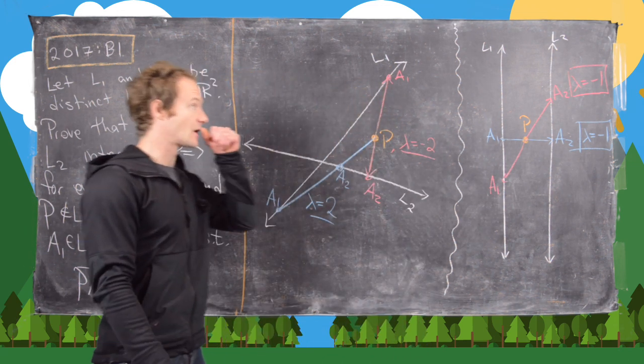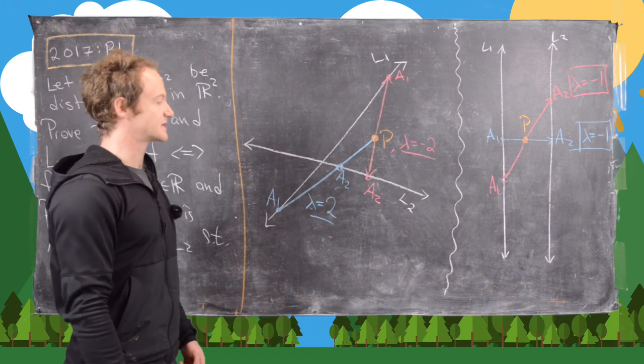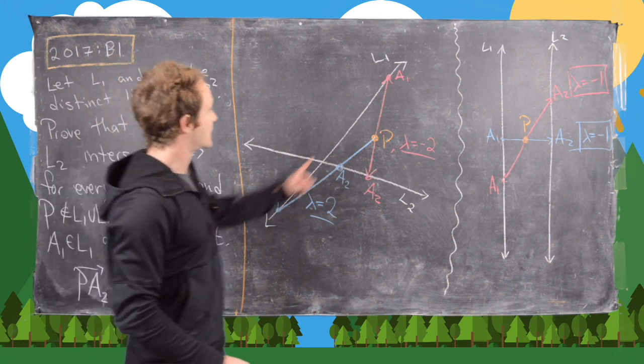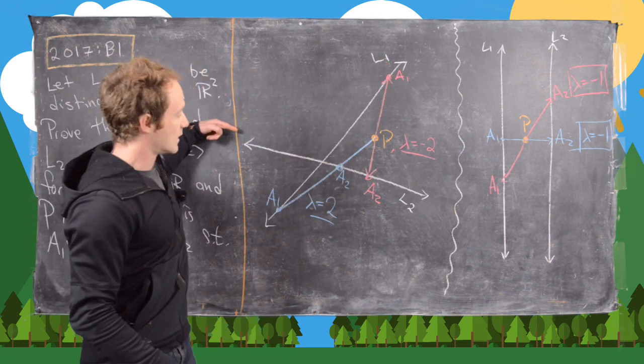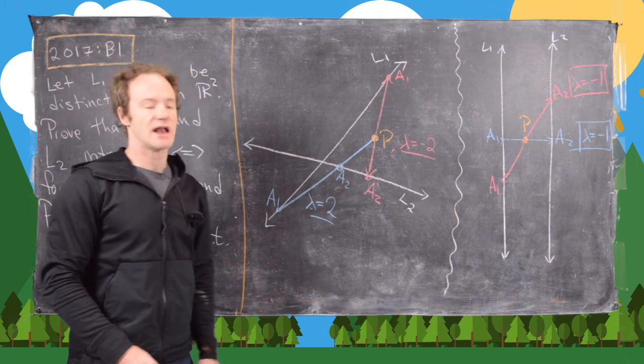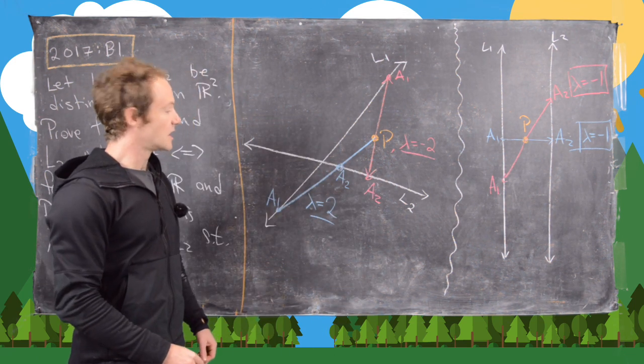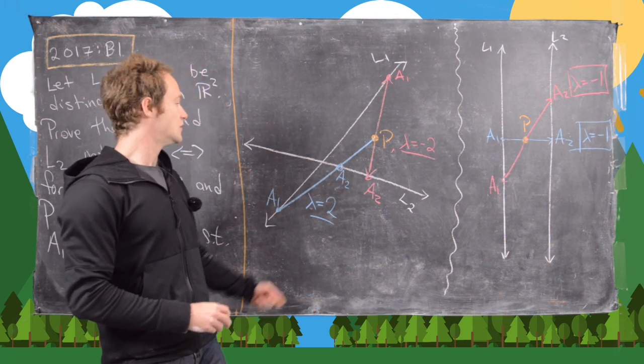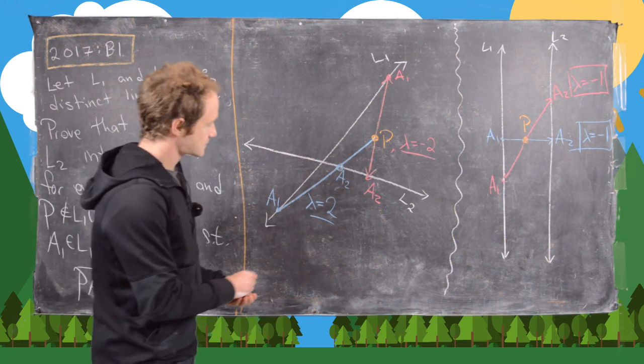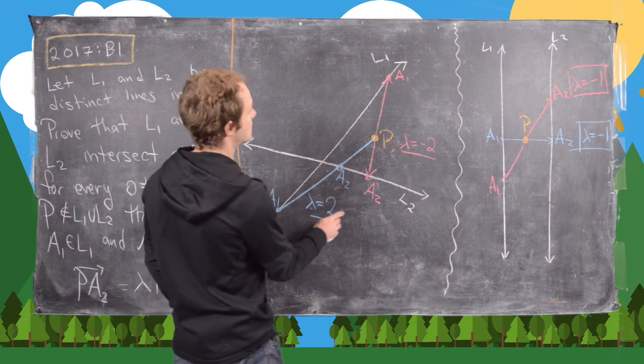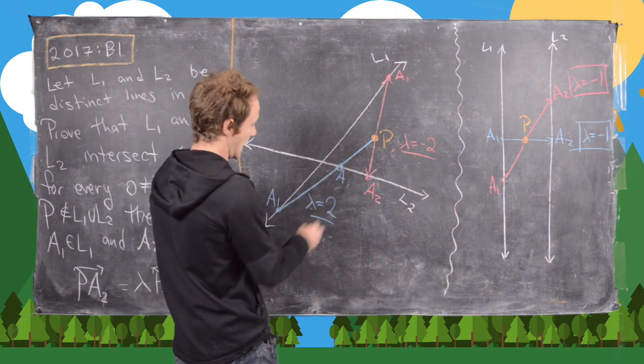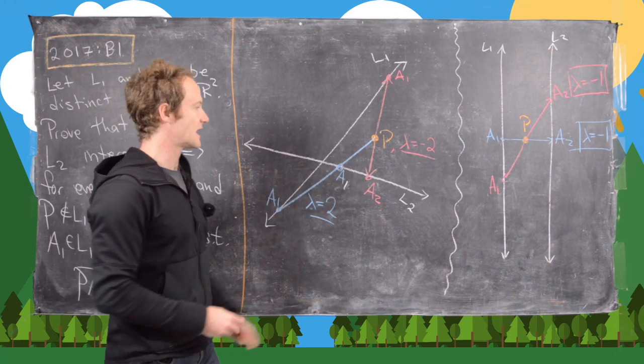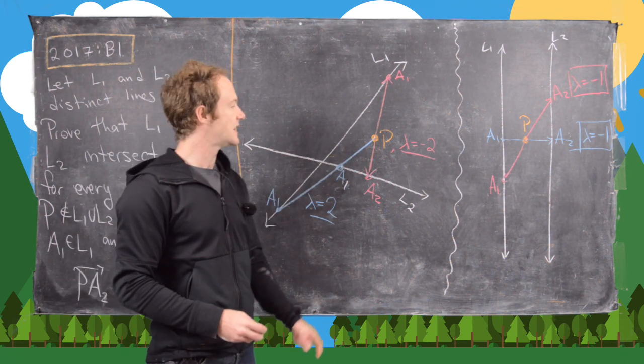Before we tackle this problem, let's look at exactly what's going on. I've drawn a couple pictures over here. Notice here I've got L1 which is one line and L2 which is another line, and these lines are intersecting. We have to show that such an A1 and A2 exists for every choice of P and lambda. So I've just chosen a P here.